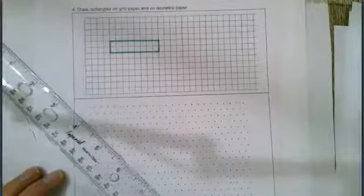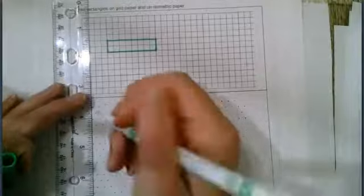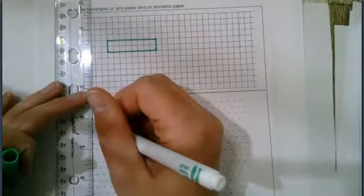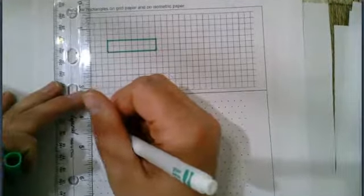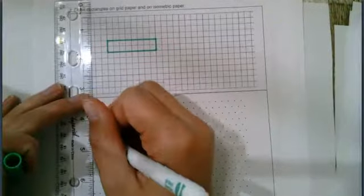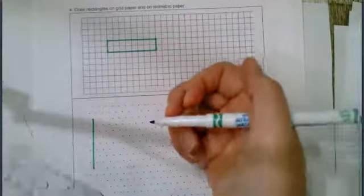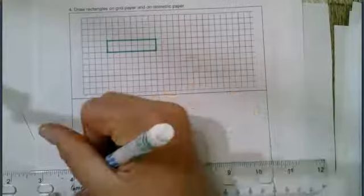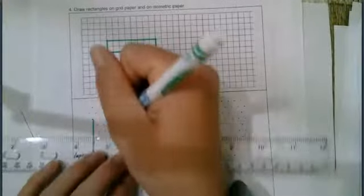Obviously, they'll all have four sides and four right angles. But you can make them look a little bit different by changing the dimensions of your rectangles.